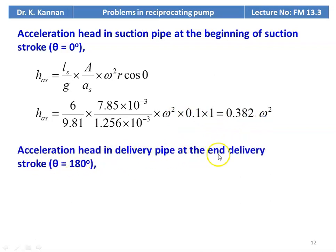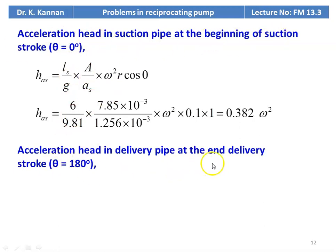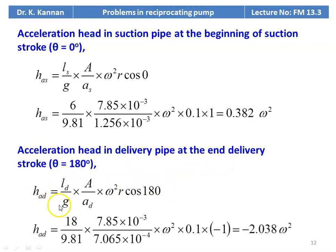Acceleration head in delivery pipe at end of delivery stroke (θ = 180°): H_EAD = (LD/g) × (A/AD) × ω²R × cos 180° = 18/9.81 × (7.85×10⁻³ / 7.065×10⁻⁴) × ω² × 0.1 × (−1) = −2.038ω².